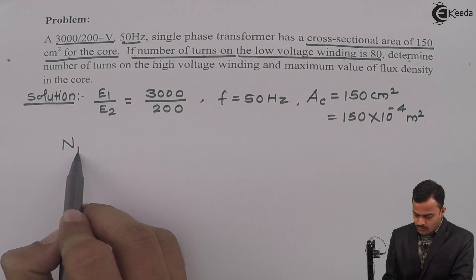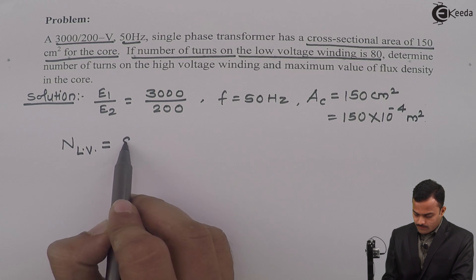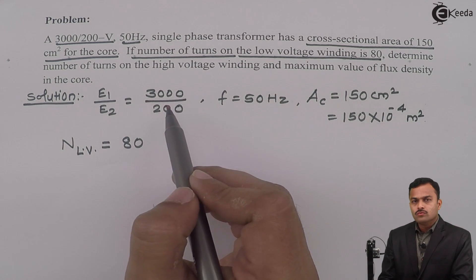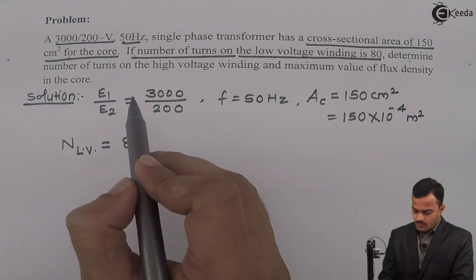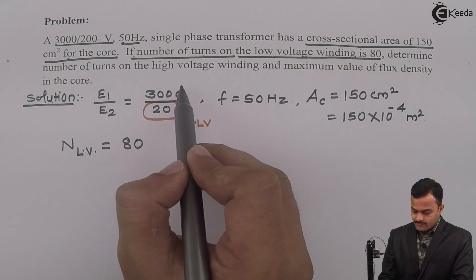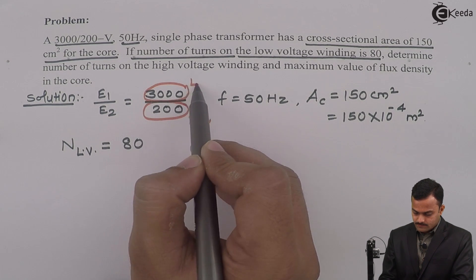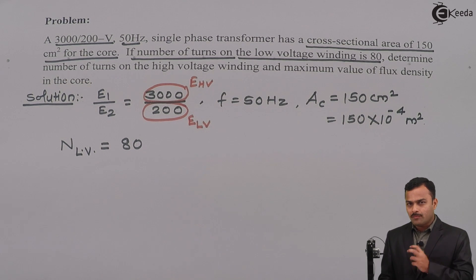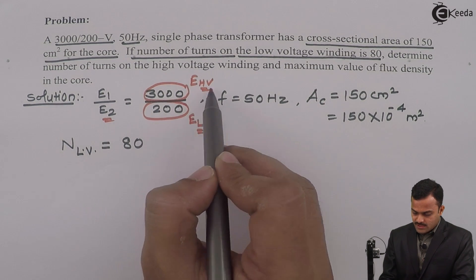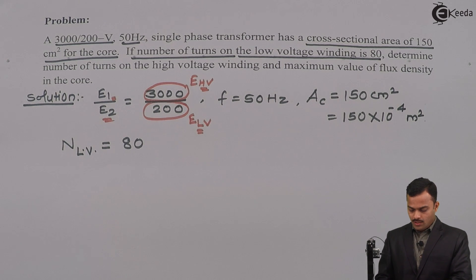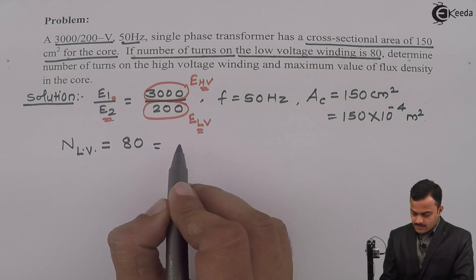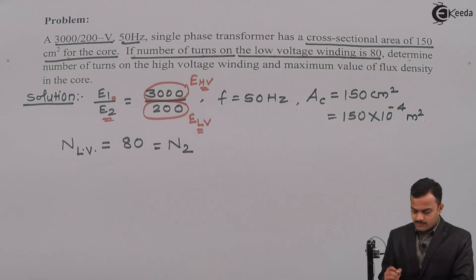Number of turns on the low voltage winding equals 80. If we see carefully, out of these two voltages, which one will be the low voltage side? Obviously E2, so this is the low voltage winding and E1 will be the high voltage winding. If we talk in terms of primary and secondary, the low voltage winding will be secondary and the high voltage winding will be primary.